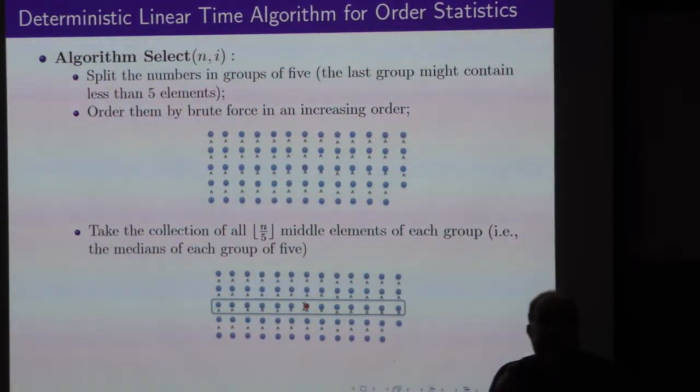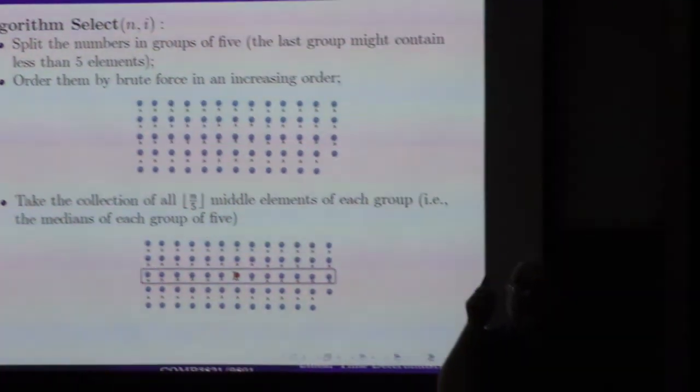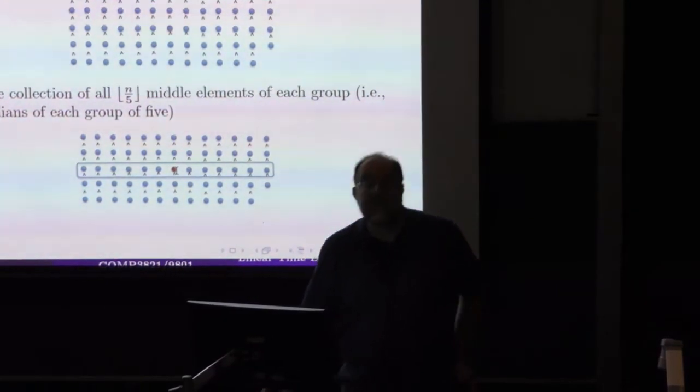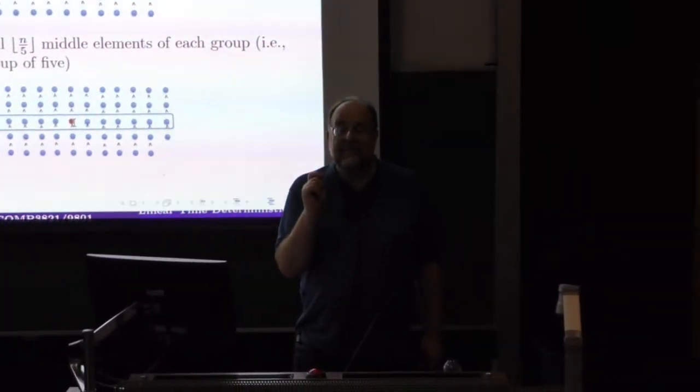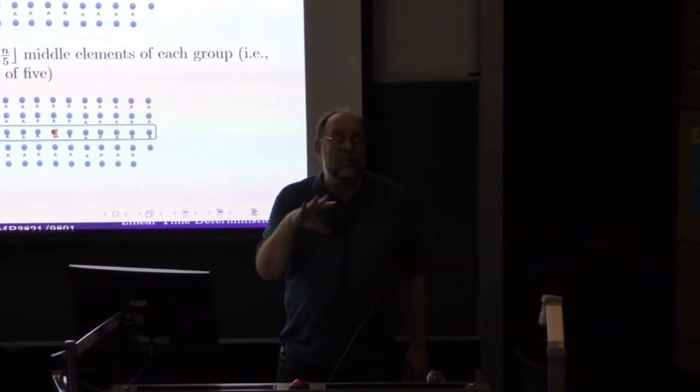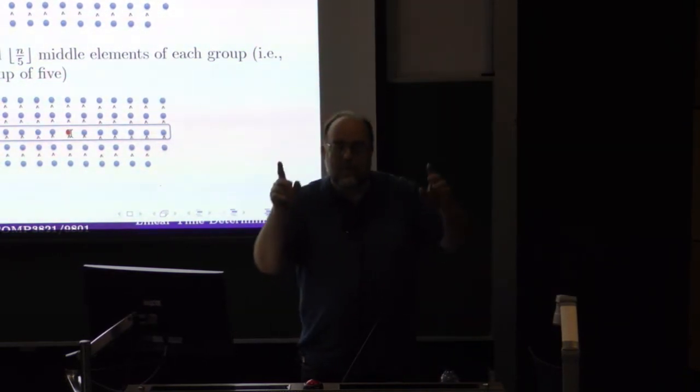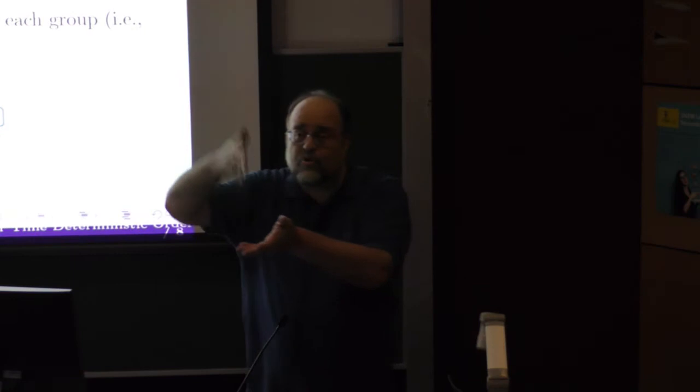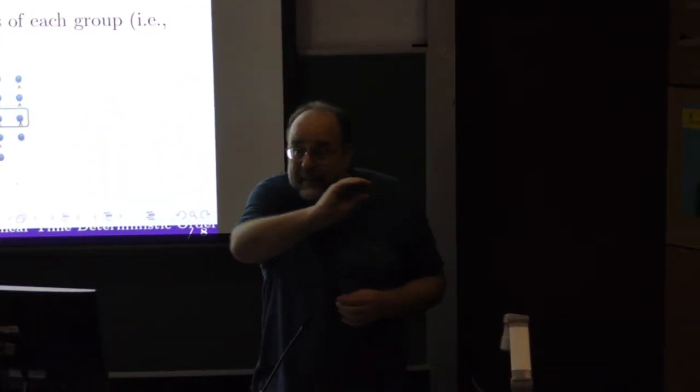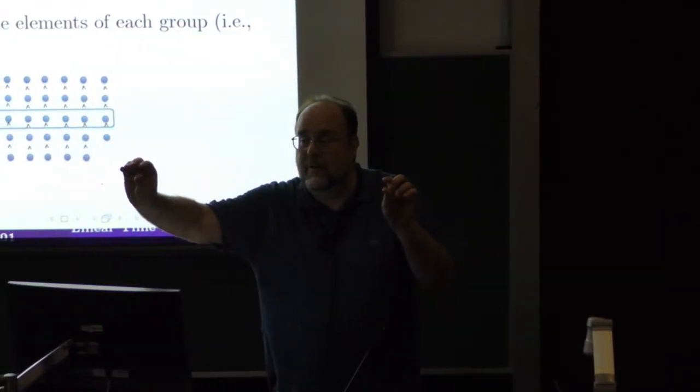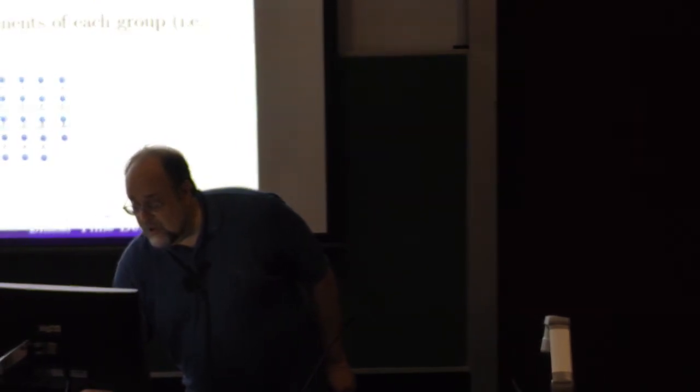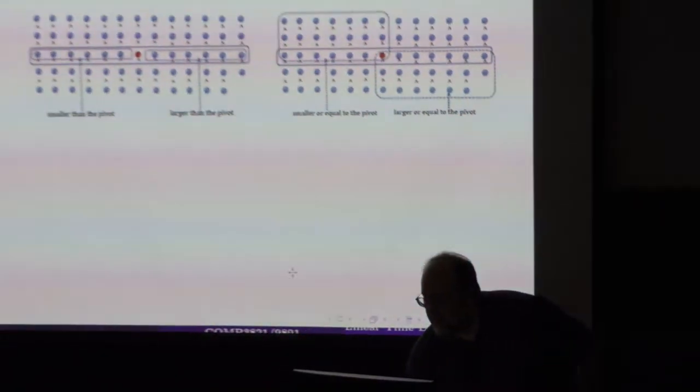And everything on the bottom is larger than the element in the middle. Now, what you do? Now, you call recursively your very own algorithm that you are designing to find the median of the middle portion. And you pick that as a pivot. You split, and now you proceed exactly as we did in the randomized case. So, how do... What's the trick? You split your elements in groups of five. Sort each group by hand. Take the middle elements, the medians of these groups. And then, call your algorithm to find the median of that middle group. What do you achieve in this way? You achieve... Here it is. What you achieve is this.